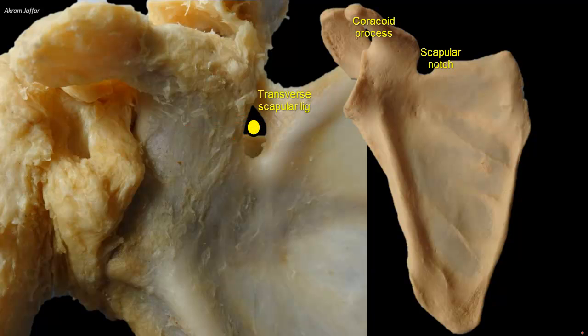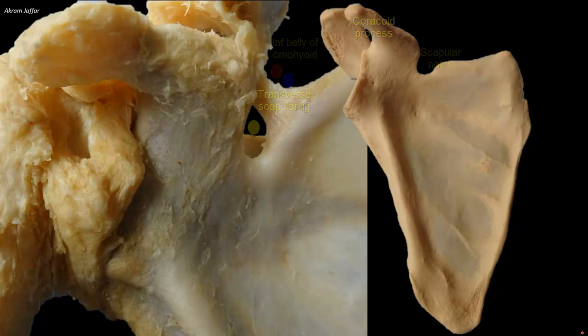The suprascapular nerve passes deep to the transverse scapular ligament, while the suprascapular vessels pass superficial to it. The inferior belly of the omohyoid muscle is attached to the transverse scapular ligament and the adjacent superior border.